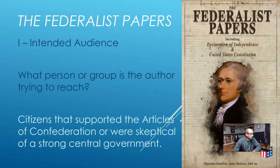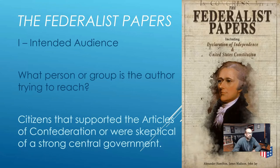Next is I — who was Hamilton's intended audience? Who was he trying to reach? Hamilton is trying to reach citizens that might be skeptical of a strong central government. He's writing the Federalist Papers to support the Constitution. He knew that the Articles of Confederation were not working, but he also knew that many citizens were skeptical of the Constitution because they felt that it gave the government too much power — and a government with too much power smelled an awful lot like a king.